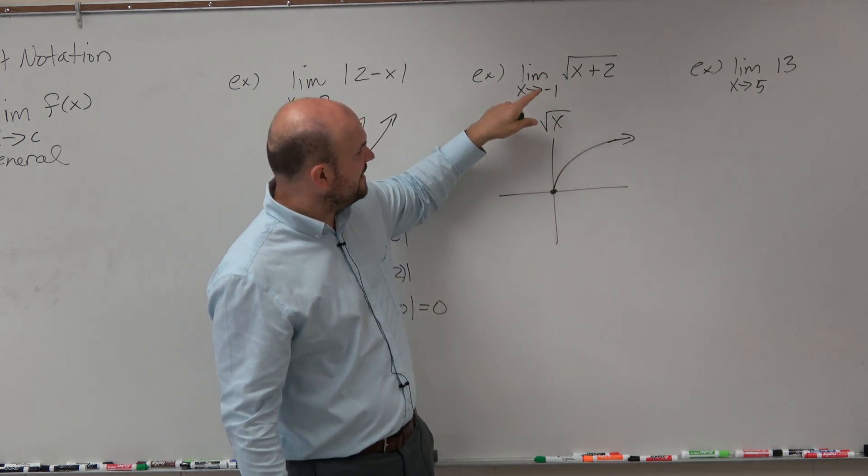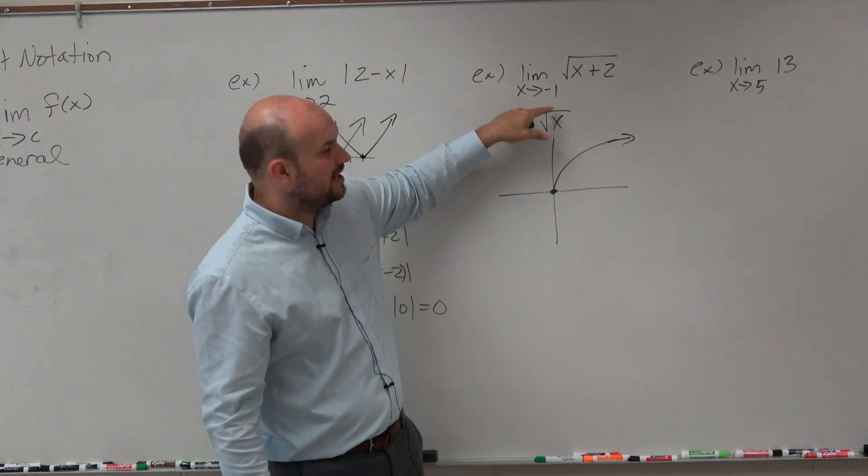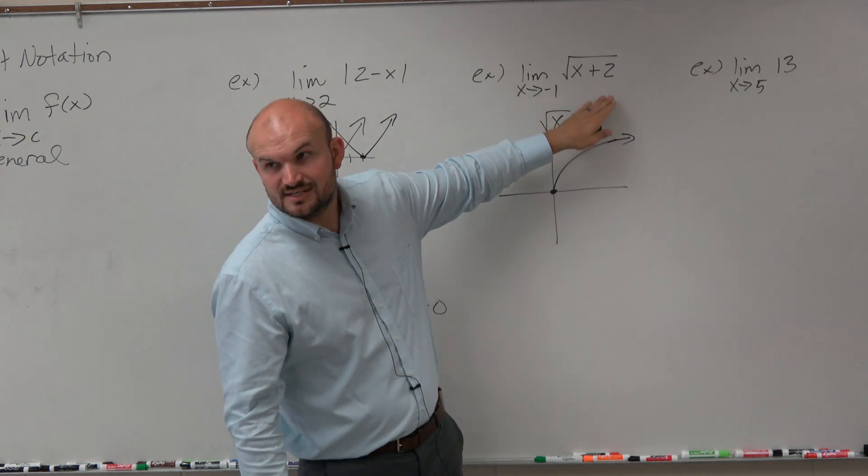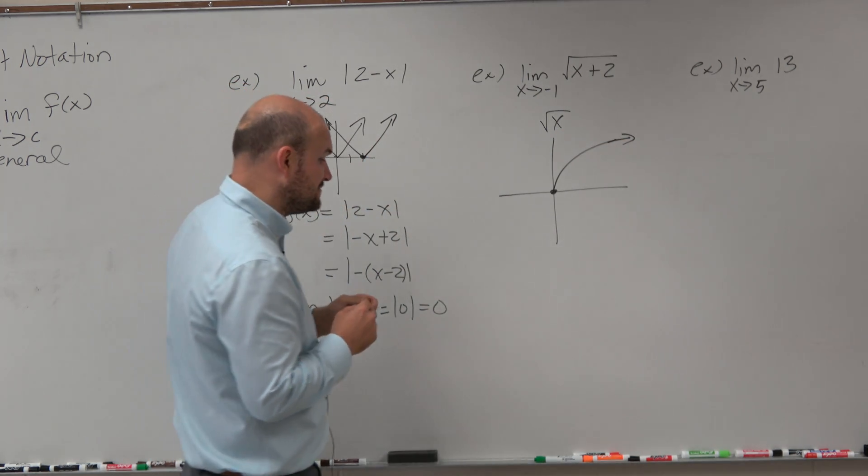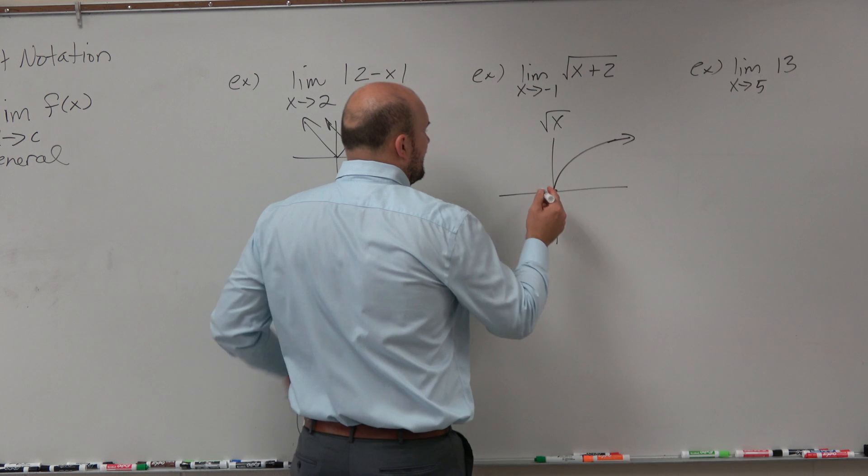So they're trying to evaluate at x equals negative 1. However, we have a transformation here. So what is this x plus 2 doing? That x plus 2 is actually transforming the graph two units to the left.